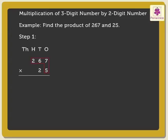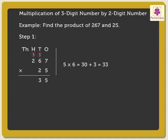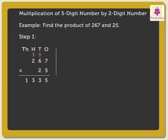Step 1: Multiply 267 by the one's digit of the multiplier, that is 5. 5 into 7 is equal to 35. 5 into 6 is equal to 30, plus the carried over 3, is equal to 33. And lastly, 5 into 2 is equal to 10, plus the carried over 3, is equal to 13. We will call 1,335 as the first partial product.